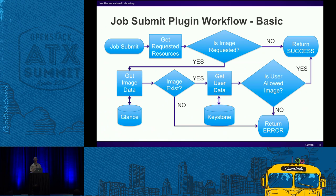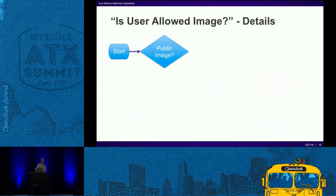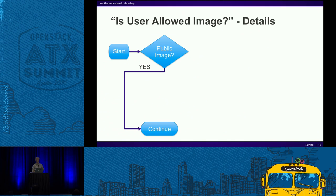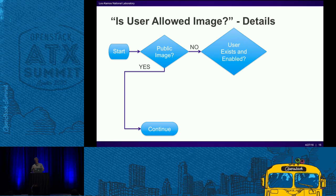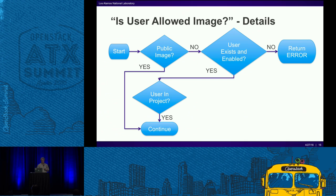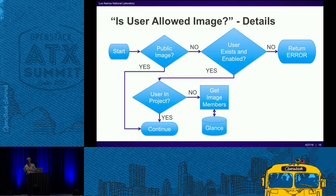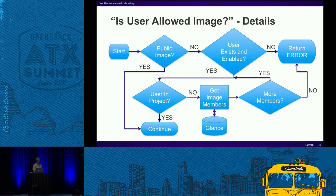The 'is the user allowed the image' check has detail to it. You can configure whether user checks are enabled at all — if you don't care, just let any user have anything. If it's a public image, we just give it to them. If it isn't public, we check whether the user exists, then whether they're in the project that owns the image. If yes, done. If not, we go get the image members — Glance's terminology for other projects an image is shared with. If there are members, we iterate through them until we either find the user in a project the image is shared with or we don't, and return success or failure accordingly.